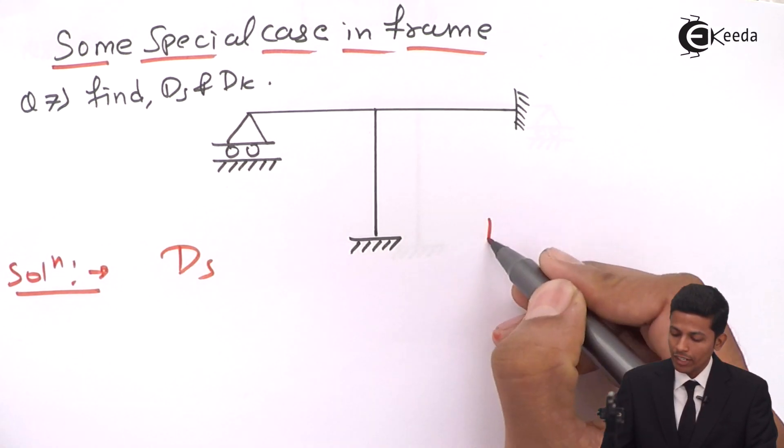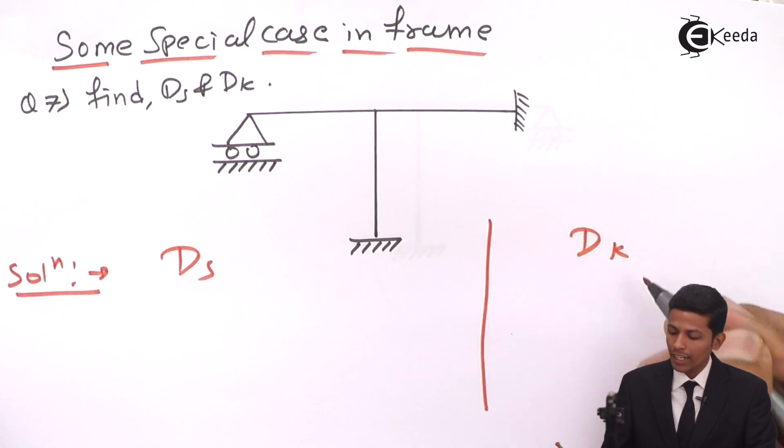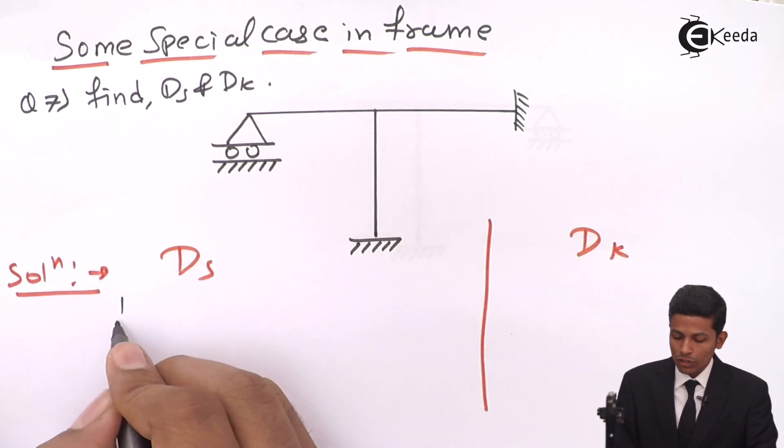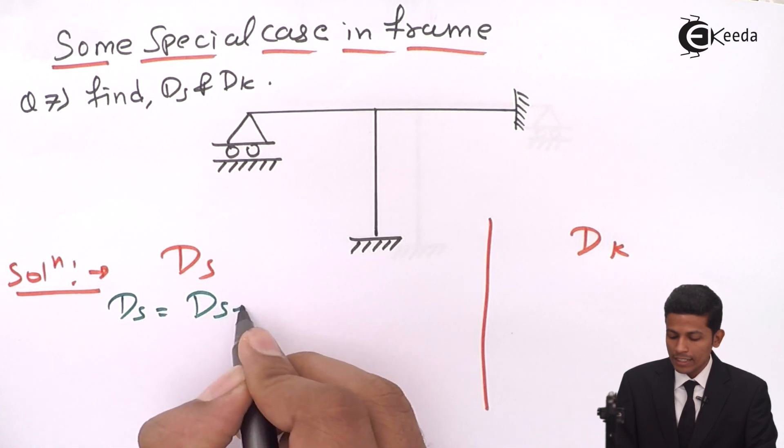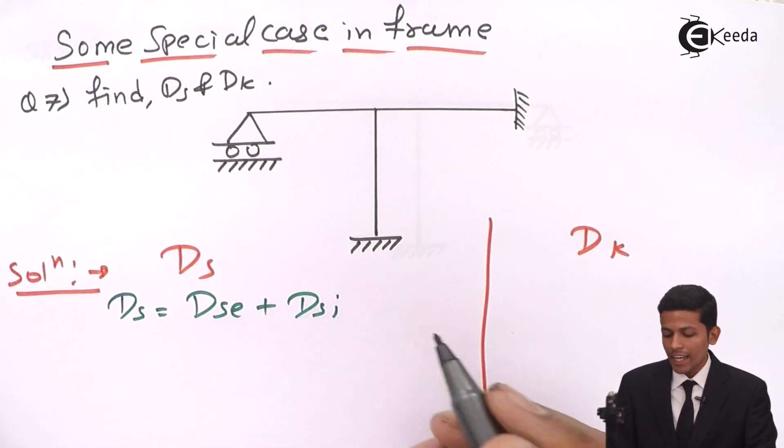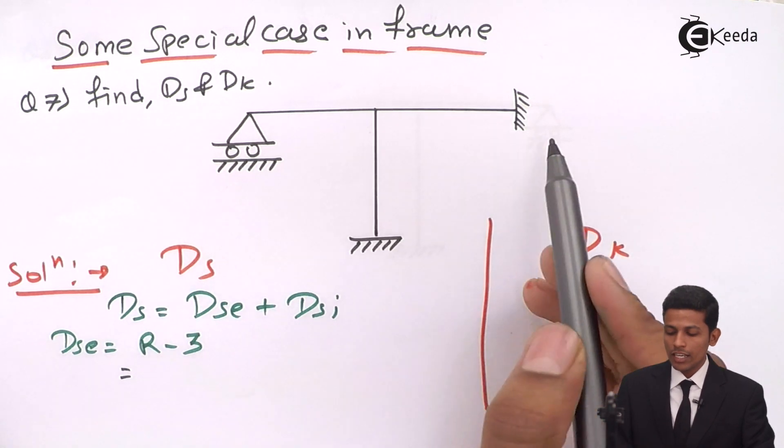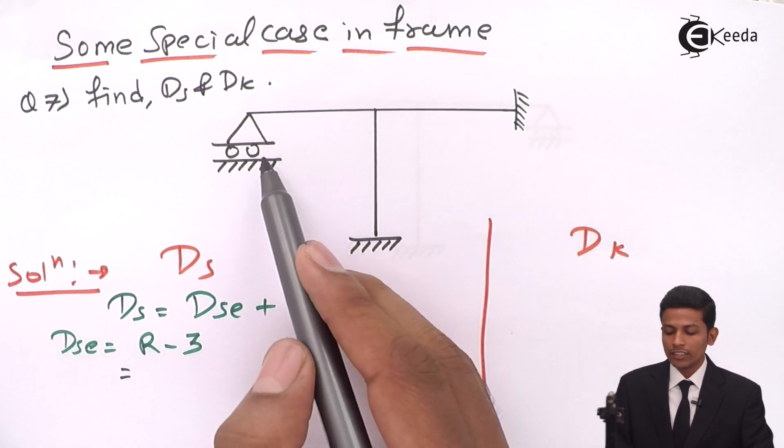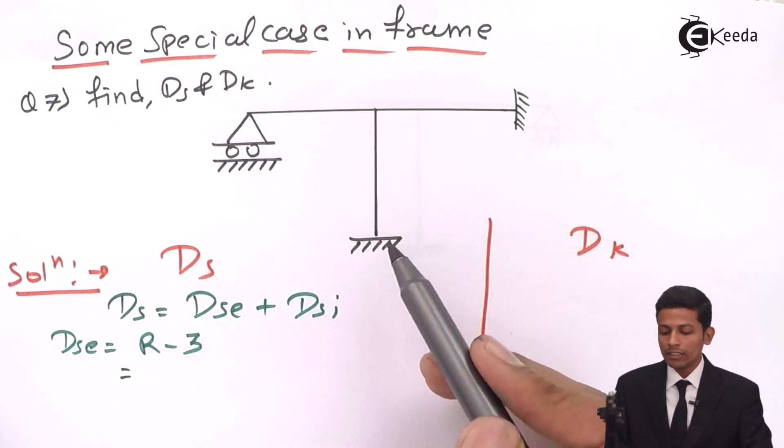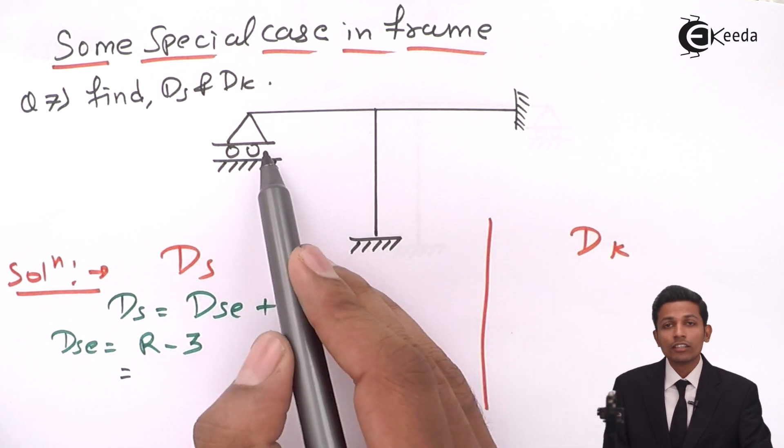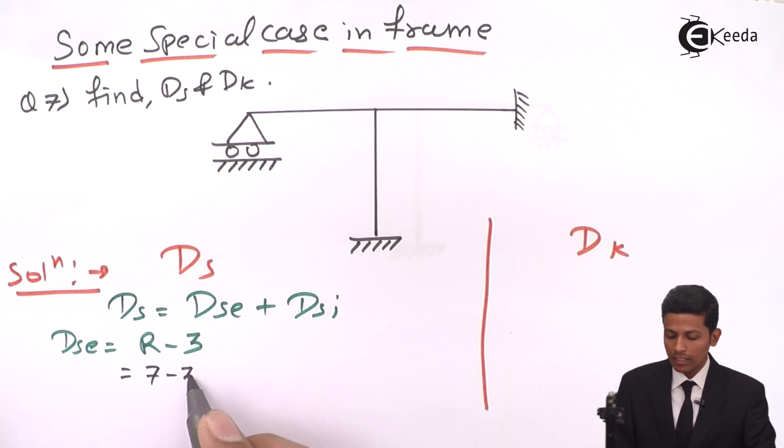Solution: first we write Ds and Dk over here. As you all know, the formula of Ds will be Dse plus Dsi, and your Dse will be R minus 3. So R will be: this is a hinge, this is also a hinge, and this is a roller, means 3 plus 3 = 6 and 7. This is 7 minus 3, which will come to 4. So your Dse will be 4.